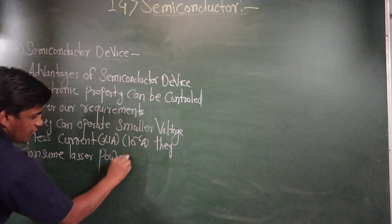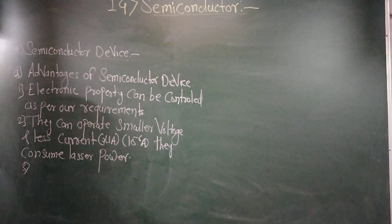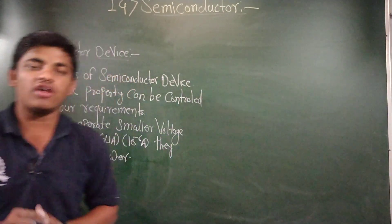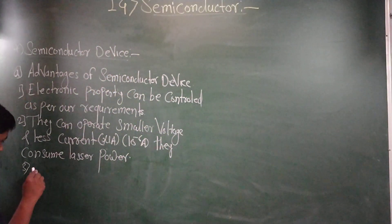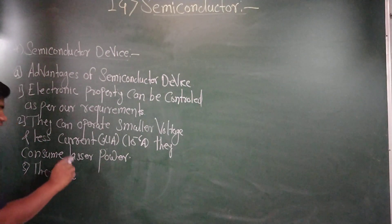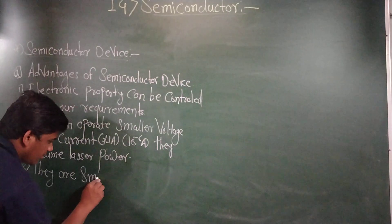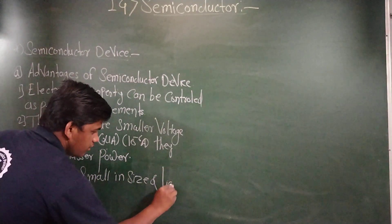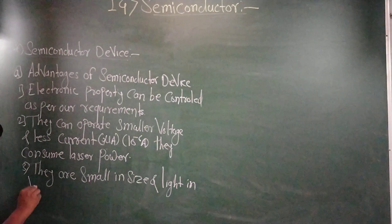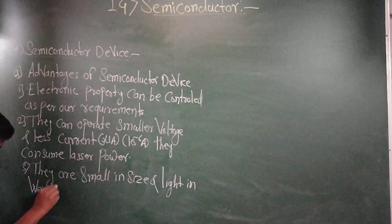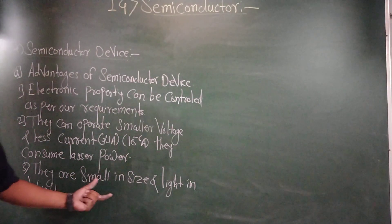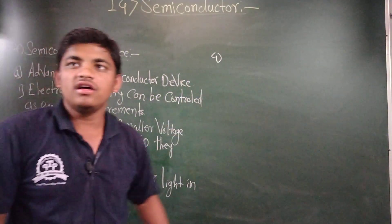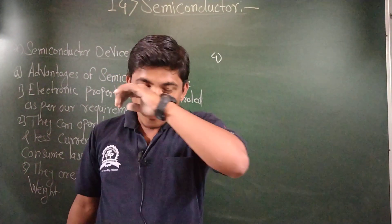These are some advantages of semiconductor devices. Semiconductor devices are very small things and light in size — they are small in size and light in weight. This is the third advantage of semiconductor devices.